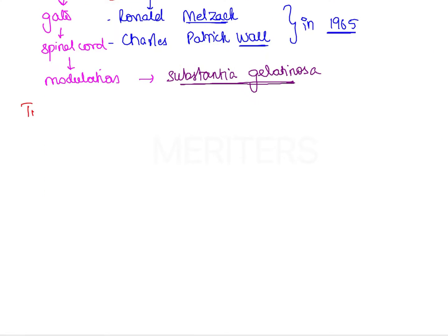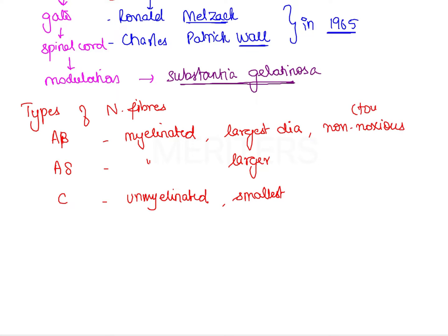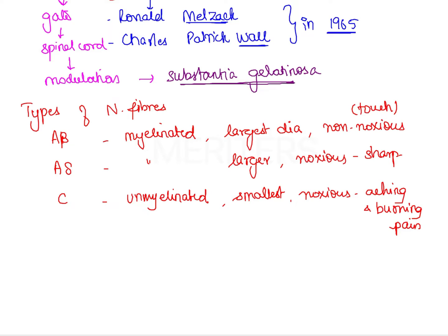The next important point is the different types of nerve fibers associated with pain: A-beta, A-delta, and C fibers. A-beta fibers are myelinated, A-delta fibers are also myelinated, but C fibers are unmyelinated. A-beta fibers are of the largest diameter, followed by A-delta, whereas C fibers are of the smallest diameter. A-beta fibers are stimulated by non-noxious stimuli such as touch, whereas A-delta and C fibers are stimulated by noxious stimuli. A-delta fibers transmit sharp pain, whereas C fibers are associated with transmission of dull, aching, and burning pain.